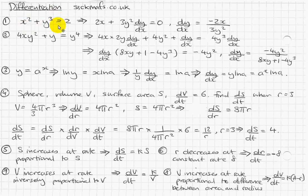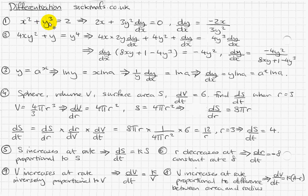We're going to differentiate this first example implicitly, which is really simple. Differentiate that normally so x squared becomes 2x. You almost differentiate that normally too — it becomes 3y squared. Basically anything with a y in it just gets a dy/dx next to it, because we're differentiating with respect to x. So you differentiate normally: 3 goes to the front, power goes down to 2, becomes 3y squared, and just stick a dy/dx next to it.